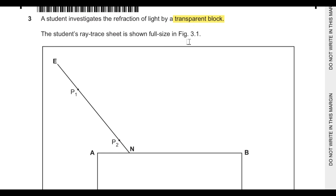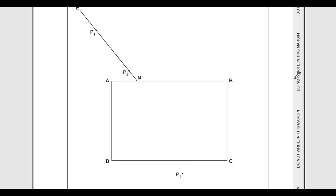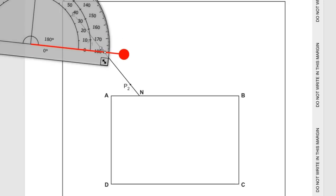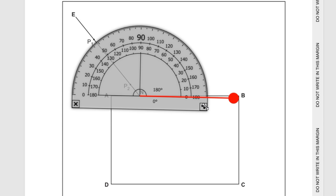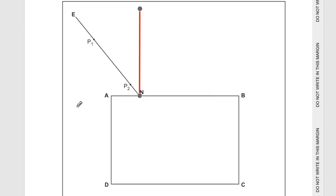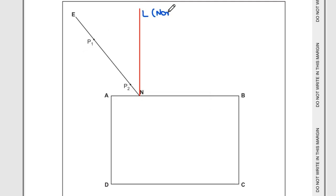Question three: a student investigates the refraction of light by a transparent block. The ray trace sheet is shown in figure 3.1, with block ABCD placed near the center. Part A asks to draw a normal at point N extending above AB and label the upper end with letter L. Make sure the line of your protractor is aligned with AB, then draw the normal above line AB and label it L.